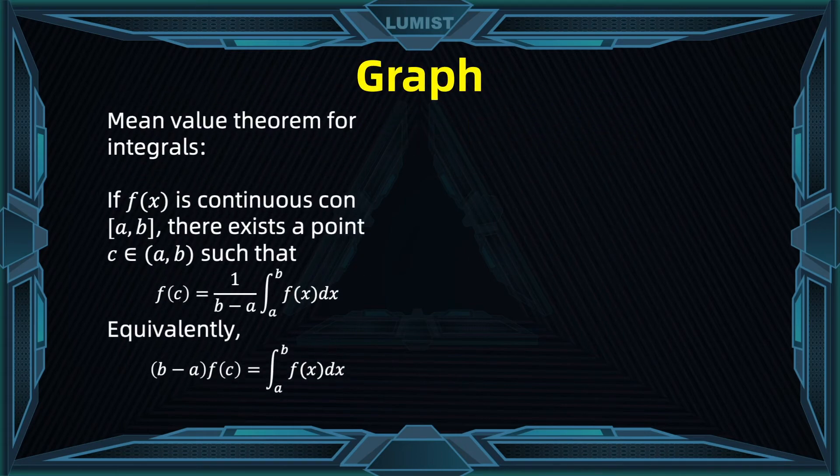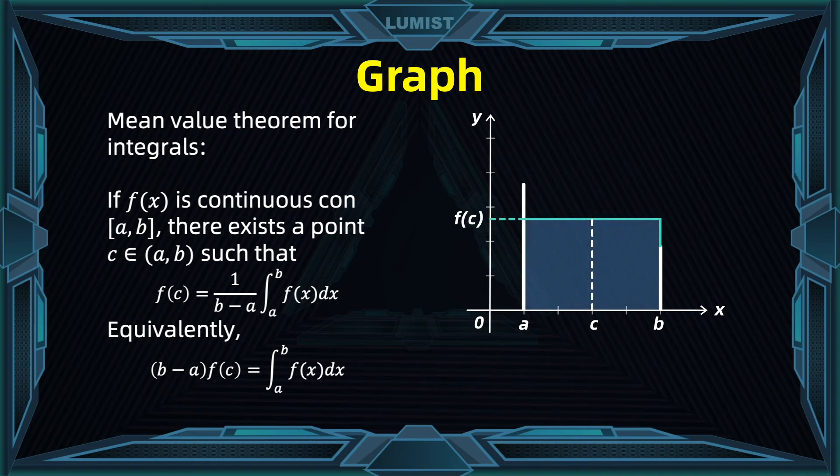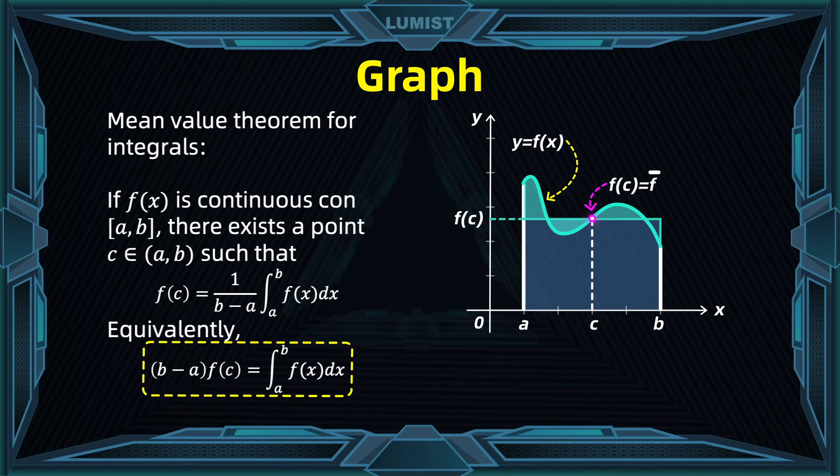The average of a function has a very interesting geometrical interpretation. Look at the graph of this function f of x. We are going to consider a point on that graph. That point is going to determine a horizontal line, y equals f of z. With that horizontal line and the lines x equals a and x equals b, we are going to determine a rectangle. The area of that rectangle is going to be the basis, which is b minus a, times the height f at z.